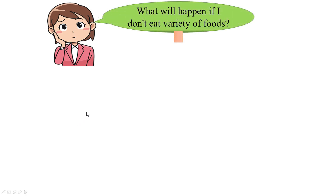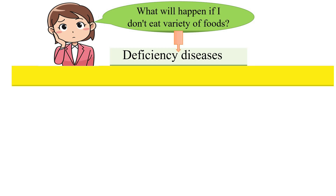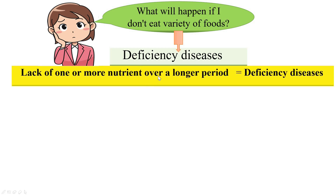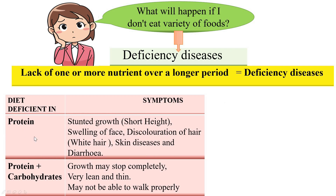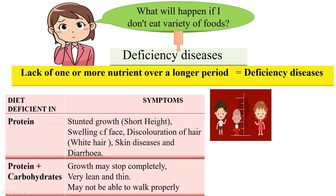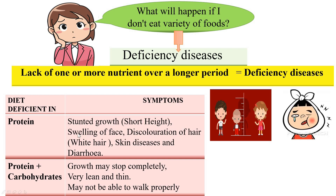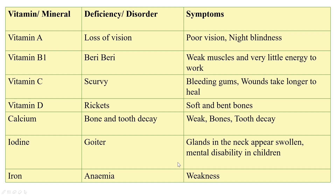If you don't eat a variety of foods, the result is deficiency diseases. Lack of one or more nutrients over a long period of time leads to deficiency diseases. For example, if your diet is deficient in protein, you may suffer from stunted growth, swelling of the face, discoloration of hair, skin diseases, and diarrhea. If your diet is deficient in both protein and carbohydrates, your growth may completely stop, you will become very lean and thin, and may not be able to walk properly.